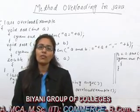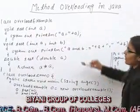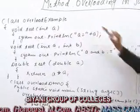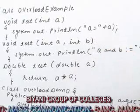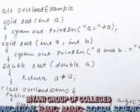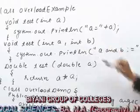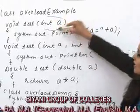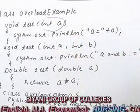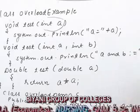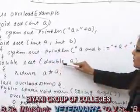Now let us know how we use Method Overloading through a program. For example, we have created a class called 'OverloadExample'. Here the first method is void test() with parameter integer a, and we have printed the value of a. The second method is also test() with parameters integer a and integer b. The third function is test() with parameter double a — so the name of the function is same but the parameters are different.